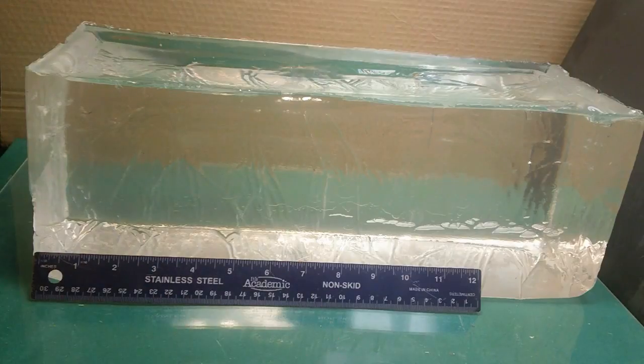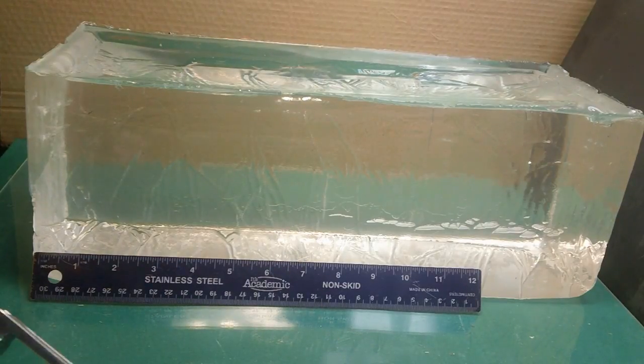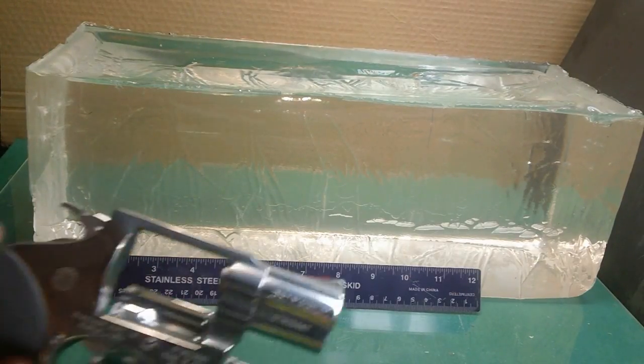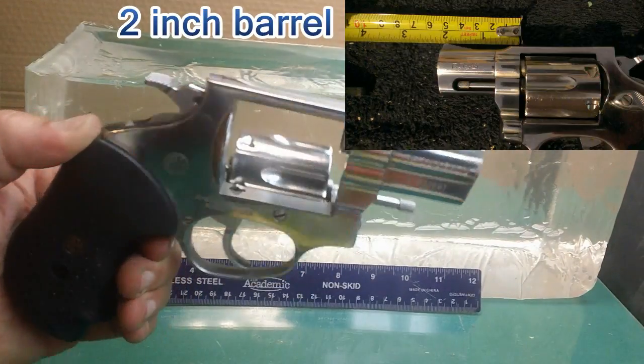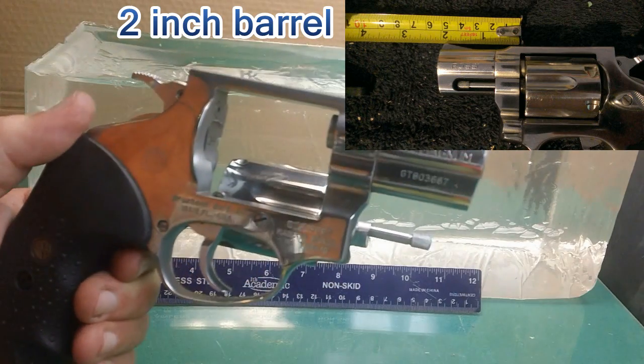What are we going to shoot it out of? What we're using is a little Rossi 357 Magnum snub nose. There it is right there, and why we chose the small snub nose...